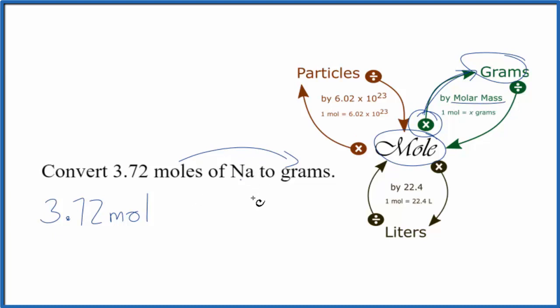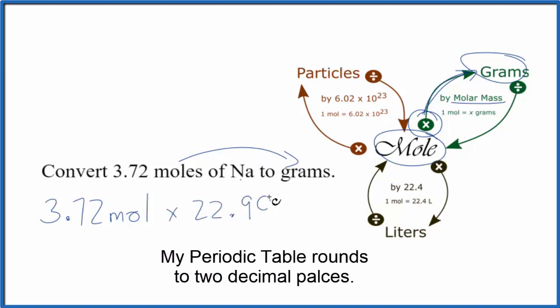So the molar mass of sodium, it's actually the atomic mass of sodium. When we look it up, it is 22.99. That's on the periodic table. Units are grams per mole.